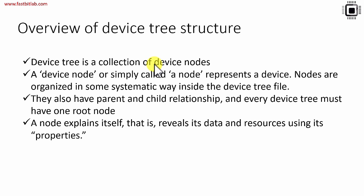A node explains itself — it reveals its data and resources using its properties. By using properties, you explain a node in the device tree file. What properties you can use is decided by the specification, so you should consult the specification document to understand all the properties available.